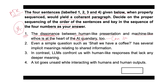Sentence two states: 'Even a simple question such as shall we have a coffee has several implicit meanings related to shared information.' So sentence two provides an example of how even a simple question carries implicit meanings related to shared information, which builds on the idea introduced elsewhere.